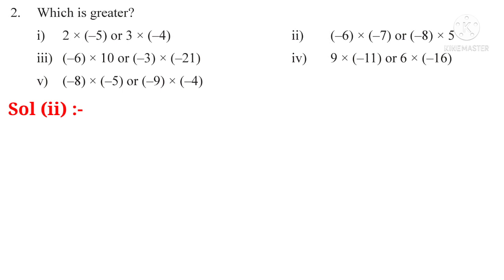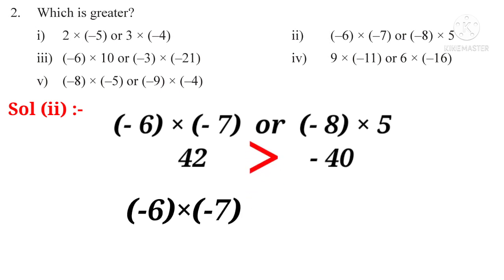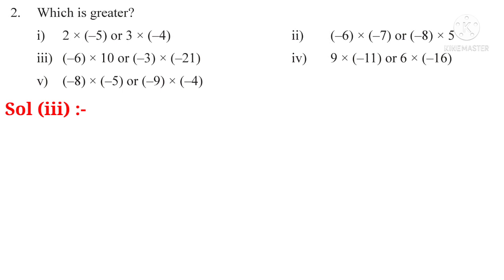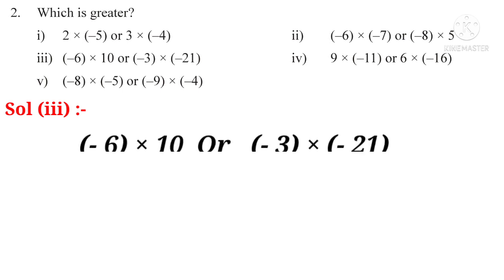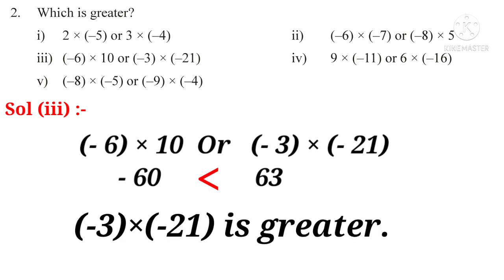Solution 2: minus 6 into minus 7, or minus 8 into 5. Minus 6 into minus 7 equals positive 42. Minus 8 into 5 equals minus 40. A positive integer is greater than a negative integer, so 42 is greater — minus 6 into minus 7 is greater. Solution 3: minus 6 into 10, or minus 3 into minus 21. Minus 6 into 10 equals minus 60. Minus 3 into minus 21 equals 63. A negative integer is always less than a positive integer, so minus 3 into minus 21 is greater.